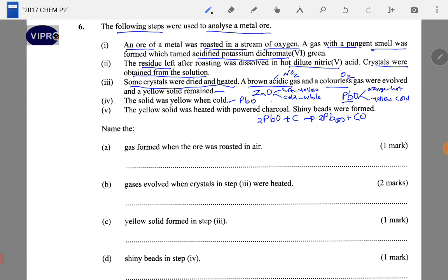Now we need to go back and fill in other spaces. The ore, because of this pungent smell, must have been having sulfur which gave rise to sulfur dioxide (SO2). It's sulfur dioxide that turns chromate to green. So the ore therefore is lead sulfide (PbS). The gas formed when the ore was roasted in air is sulfur dioxide. Gases evolved when crystals in step three were heated: nitrogen dioxide and oxygen.